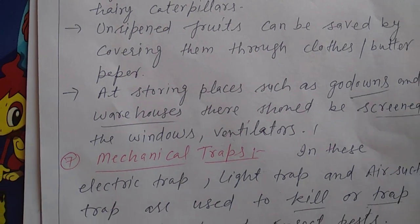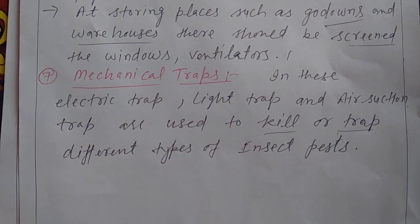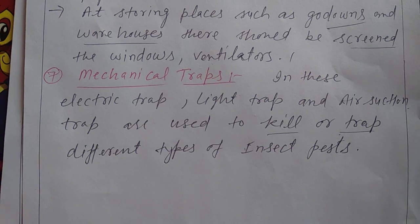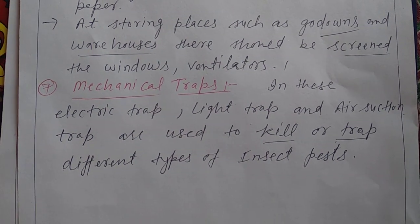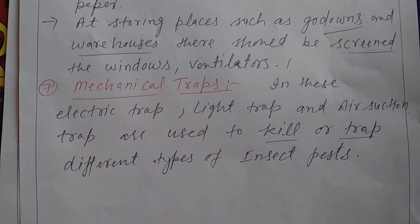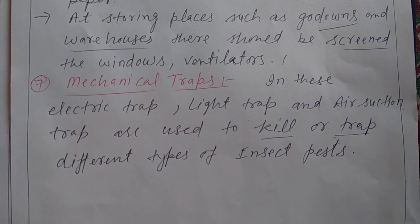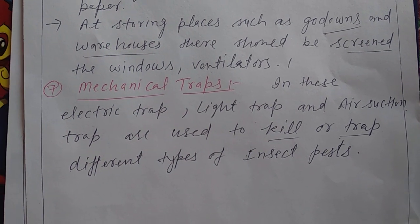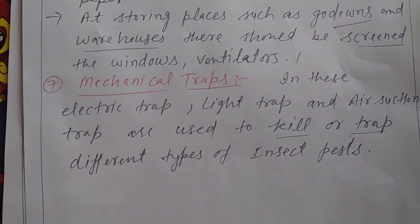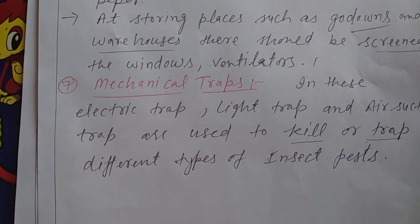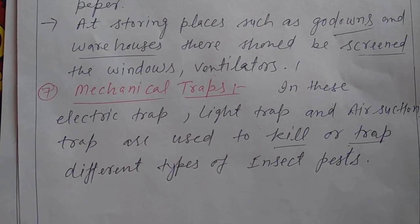Next are mechanical traps — electric traps, light traps, and air suction traps. These can be used to catch and kill different types of insects electrically using light and air suction. This was today's topic, thank you.